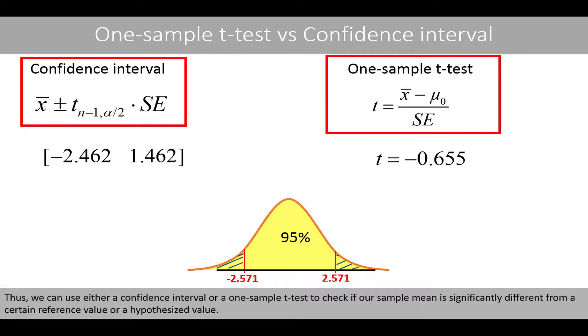Thus, we can use either the confidence interval or the one-sample t-test to check if our sample mean is significantly different from a certain reference value or a hypothesized value.